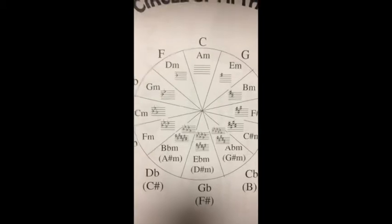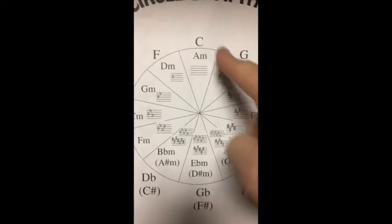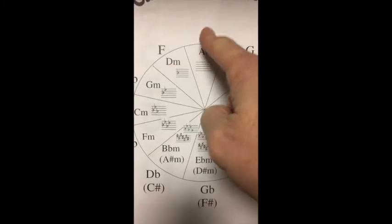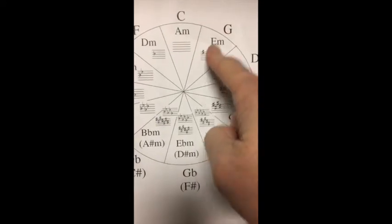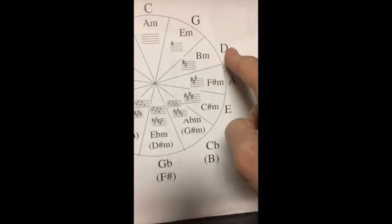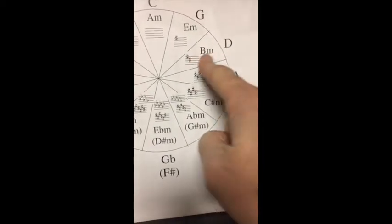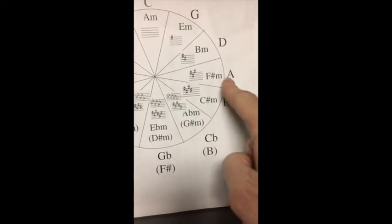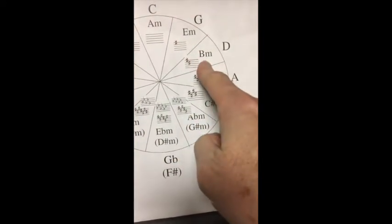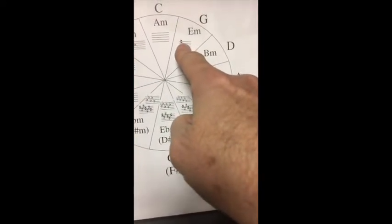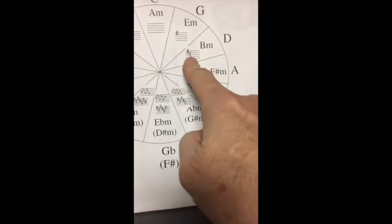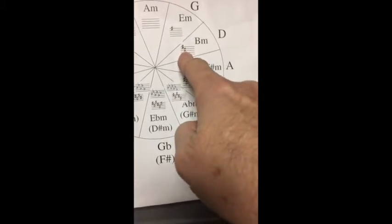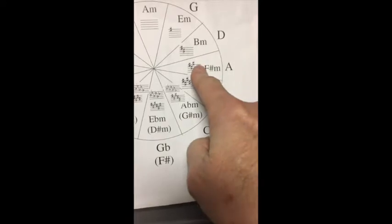Each new key is a fifth away from the last one. Key of C: no sharps or flats. Key of G, up a fifth: one sharp. D, up a fifth: two sharps. A: three sharps. You get it. And the sharps go up the same distance. F's are sharp in the key of G, but then F, G, A, B, C—the new sharp in the key of D major is C sharp. Now that's the new guy here.